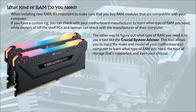If you have an off-the-shelf desktop PC or laptop, you can also find out how much RAM it can accept and the type and configuration of existing RAM modules by checking with the manufacturer. When installing RAM, it is important to make sure you buy modules that are compatible with your computer. You can check with your motherboard manufacturer, or use a tool like the Crucial System Advisor, which allows you to input the make and model of your motherboard or computer to learn what type of RAM you need, what storage is supported, and even your chipset.